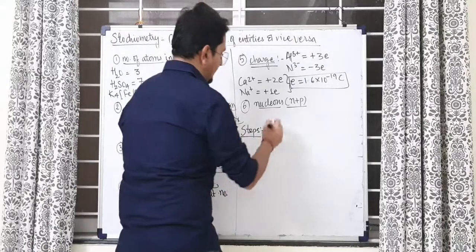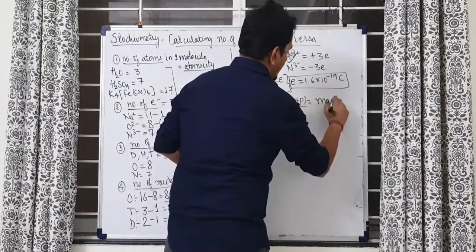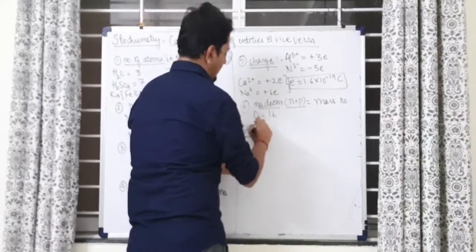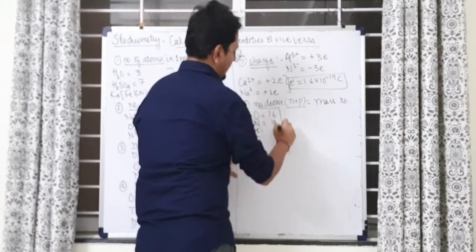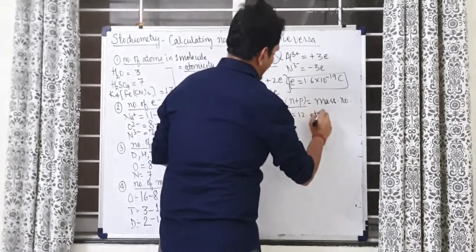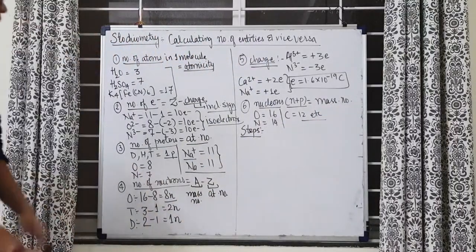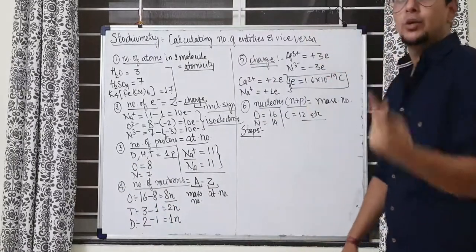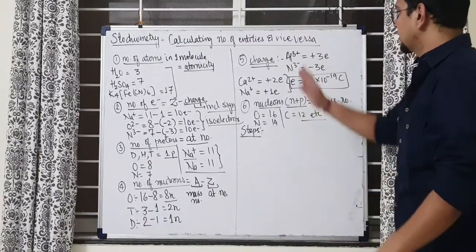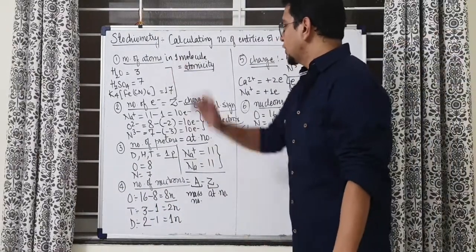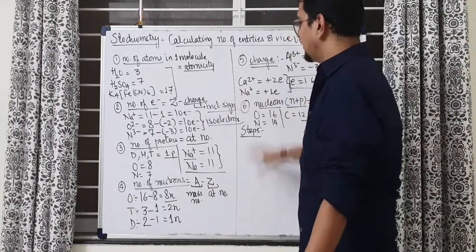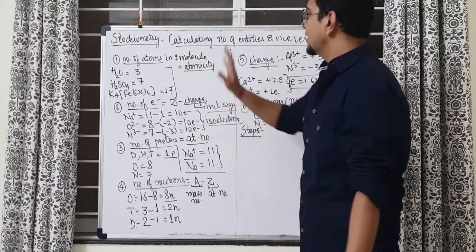Number of nucleons? Very simple. It is simply equal to the mass number. For example, oxygen, 16. Nitrogen, 14. Carbon, 12. Etc. Many such examples are there. So firstly, you understood how to find the number of entities in one unit of that thing. One unit of the ion, one unit of the molecule, one unit of the sample given to you. You found how to find the number of electron, proton, neutron, charge and atoms.